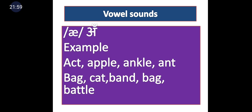The /æ/ vowel — the symbol is an inverted E joined with a straight E in the slant bar. Examples initially: act, apple, ankle, and. Medially: bag, cat, band, battle. Remember this symbol: inverted E plus straight E joined together in the slant bar represents the /æ/ sound.